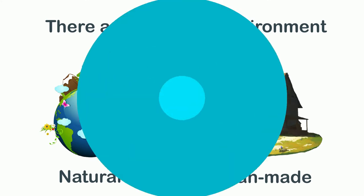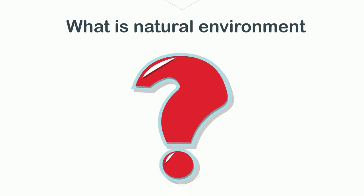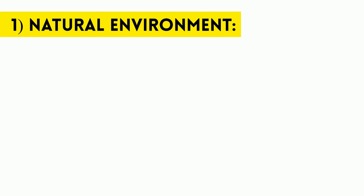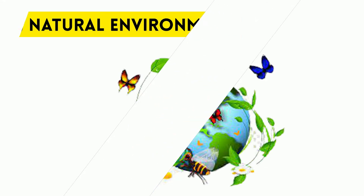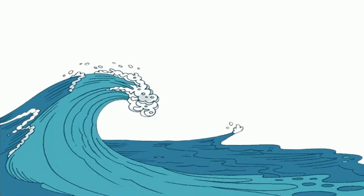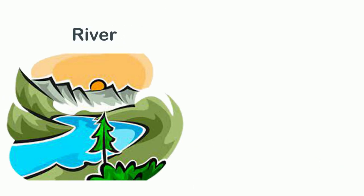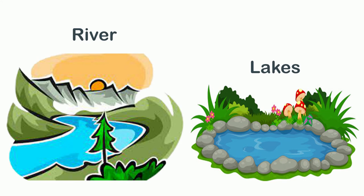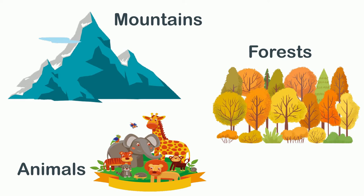What is natural environment? Natural environment is made up of the objects that exist naturally in the environment, like the sun, air, water in the form of oceans, rivers, lakes, etc., mountains, forests, animals, etc.